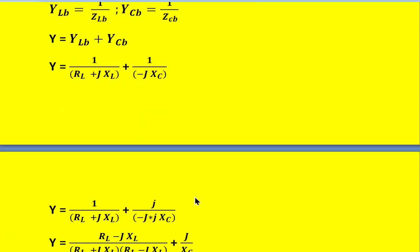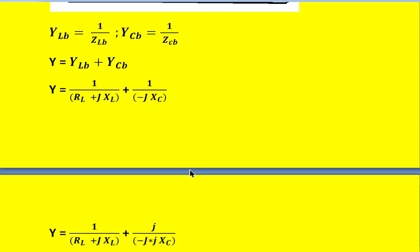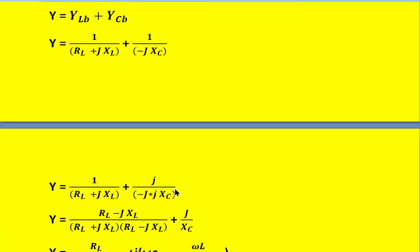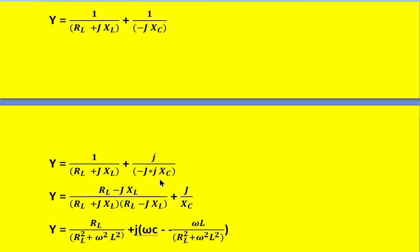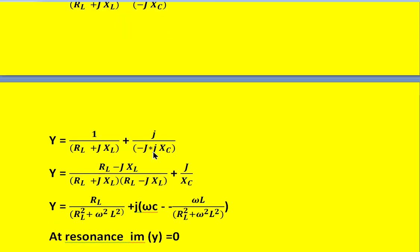In the second term, multiply the numerator and denominator by j. Then this j and j becomes j squared. j squared means it becomes minus 1, so the two minus signs will become plus. Also, in the first term, multiply the numerator and denominator with the conjugate of the denominator, that is R_L minus j·X_L. Then after further simplification, the Y equation becomes as shown.